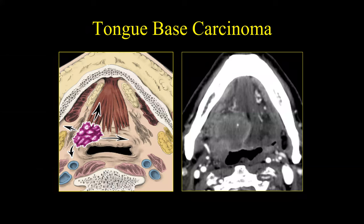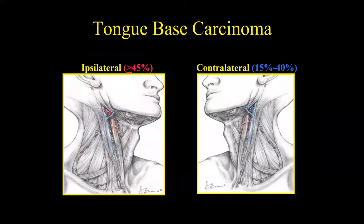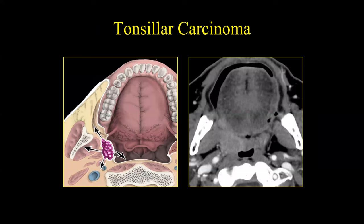Here is an example of a tongue-base carcinoma — a very large right-sided tongue-base carcinoma on CT. The ipsilateral neck and level 2 lymph nodes are most at risk. In oropharynx cancers, specifically tongue-base cancers, you can have the contralateral neck involved, typically at level 2 — but it is still more common on the ipsilateral side than the contralateral side.